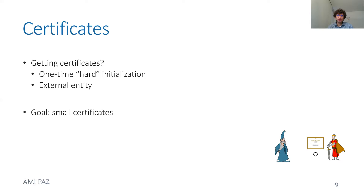One question you may ask is: how do you get these certificates? One answer is a one-time initialization — when you build the network or replicate the data, units also create certificates to check later that the data is still okay. Another way is to think of an external entity, say a cloud that sees all the network and the replicated data, and helps verify the state. Our goal is to have small certificates and small messages, since certificates are kept in memory and sent in the background without interfering with regular system work.